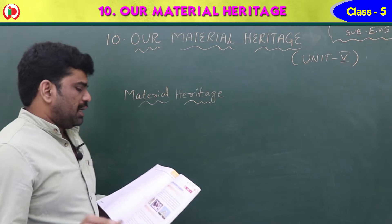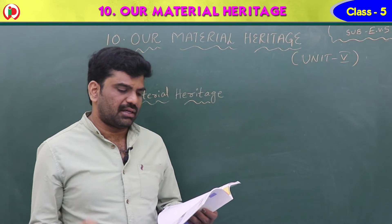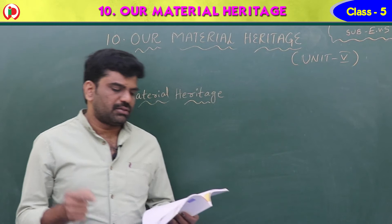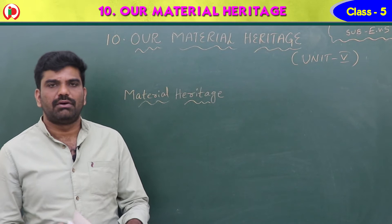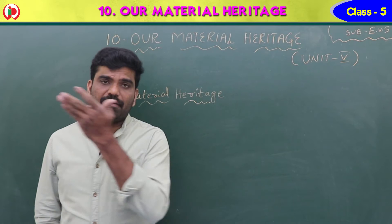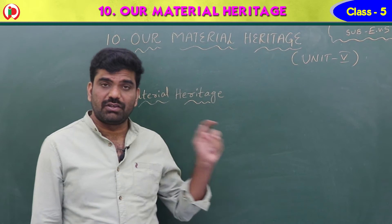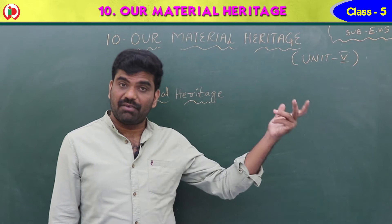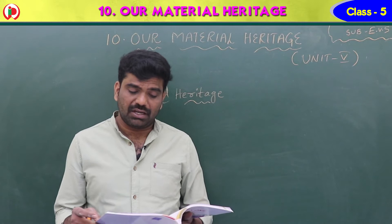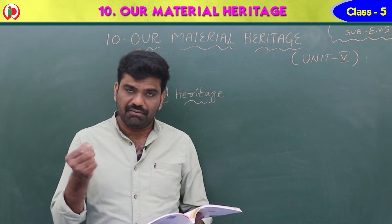Material heritage includes all historical things that exist in physical form even today. What are the historical things? For example, have you ever visited Golconda? That is a historical place. Museum — historical place. Salarjang Museum — historical place. Mysore Palace — historical place. And Taj Mahal, one of the seven wonders — it is a historical place. So material heritage includes all historical things that exist in physical form even today.